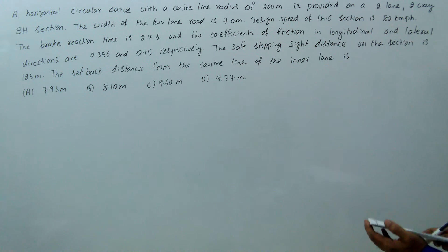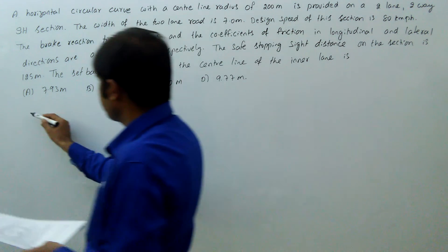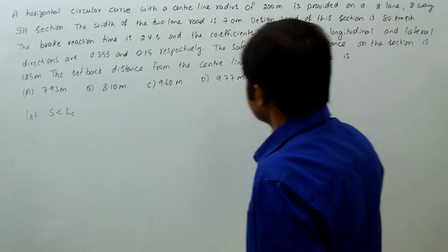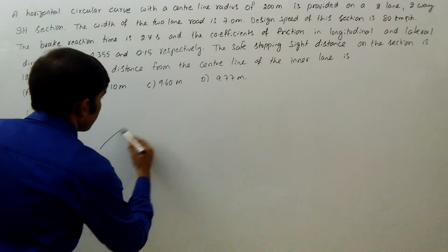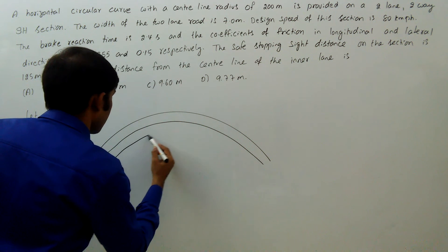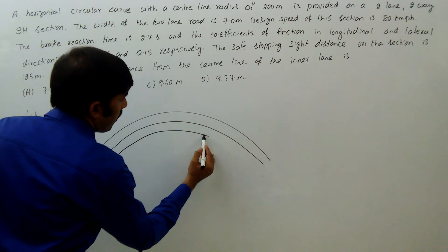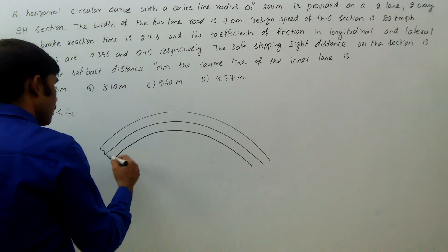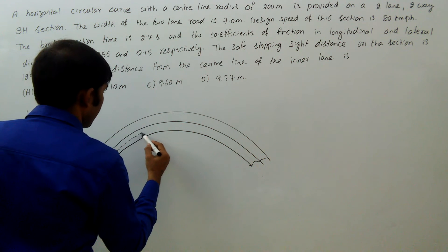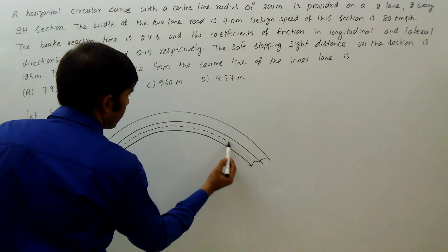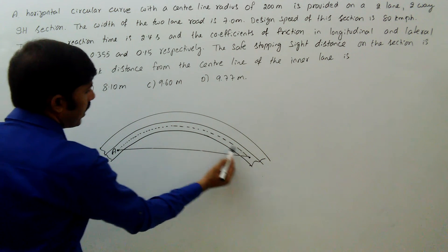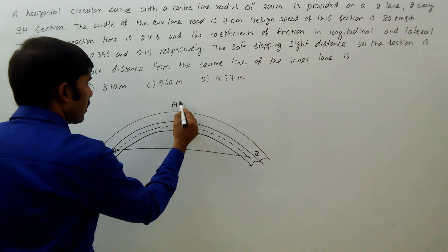Since the length of the curve has not been given, we assume S (sight distance) is less than the length of the curve. On the two-lane road, this is the center line of the inner lane. The required side distance is from point A to point B, where AB equals S, along the center line.